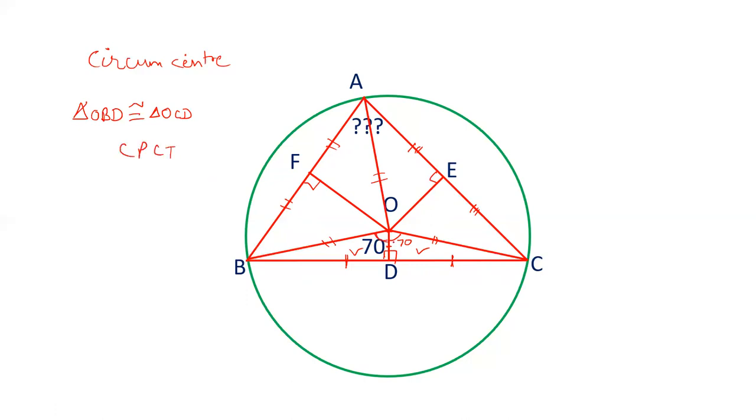So, the whole angle BOC is 140 degrees. It equals 70 plus 70.